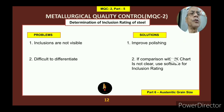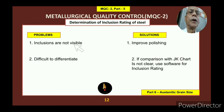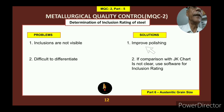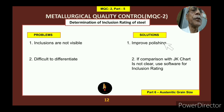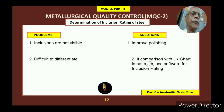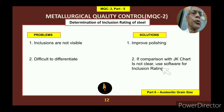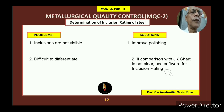Problems and their possible solutions: First, inclusions are not visible — this is generally due to poor sample preparation. From cutting, grinding, and polishing, if things are done properly and diamond paste is used, you will get a very good surface. Second, it is difficult to differentiate inclusion types — if comparison with the JK chart is not clear, use software for inclusion rating, especially for sulphide and silicate inclusions. These software tools are now widely available and make the process very easy for metallurgists.